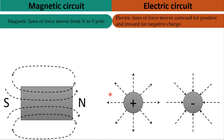In a magnetic field, the lines of force form a closed loop. However, in an electrical circuit, there is no closed loop — from a positive charge, electrical lines of force always go outward, and for a negative charge they always come inward, so there is no closed loop in the electrical case.